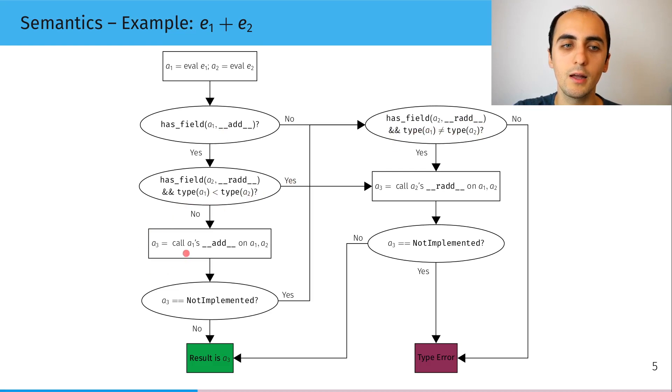we'll either end up calling a1's add method or a2's radd method. Then we'll check the return type and depending on that, we'll either give back the result or raise a type error.